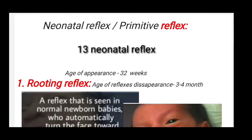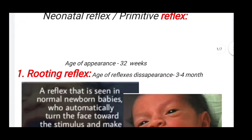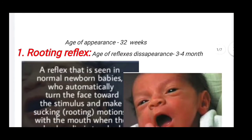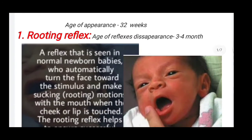Welcome back. In this video I am going to cover primitive reflexes. First of all, we have to know the definition of a reflex. Reflexes are involuntary movements or actions that help identify brain and nerve activity. There are a total of 13 primitive reflexes. First we will see the rooting reflex.